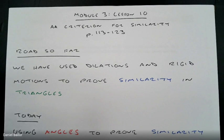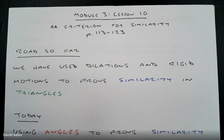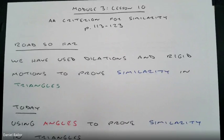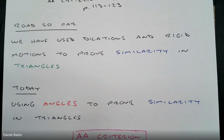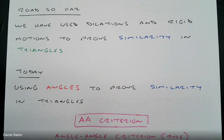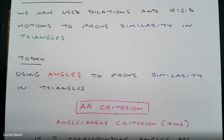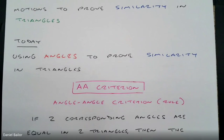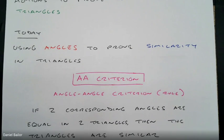This is another rule that helps you find similarity in triangles without dilating, without rigid motions — you just have to pay attention and find the rule. Today we're going to use angles to prove similarity in triangles, using something called the AA Criterion. AA Criterion means angle-angle criterion — criterion just means rule.